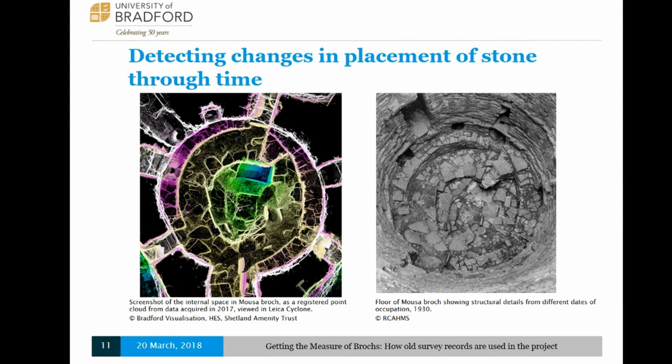One of the ways I'm doing this is by looking at how stone has been placed and moved across time. This image on the left is the registered laser scan dataset of the central internal area of Mousa Brock from last year's surveys, and the image on the right is a photo taken from 1930. On the whole, not much has changed, but you can pick up some key differences — for example, the central water trough in the middle of the site appears to have been filled up more with gravel in the 1930s, whereas nowadays it's completely empty.